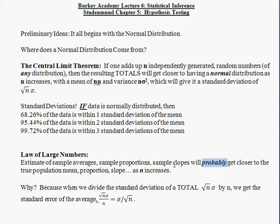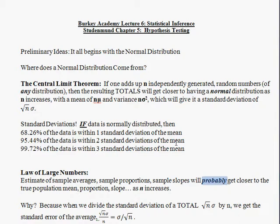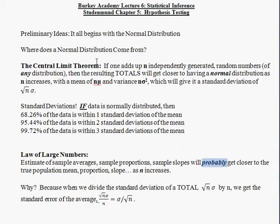The central limit theorem does not say this. The central limit theorem says that in some cases a larger sample size means that your estimates will follow a normal distribution, if you're talking about adding things up or averaging them.